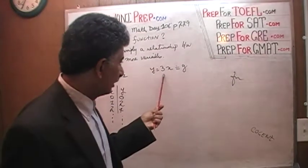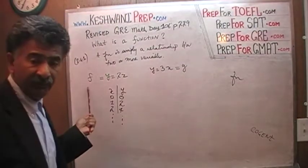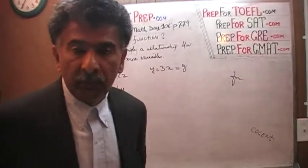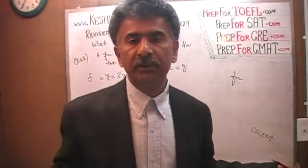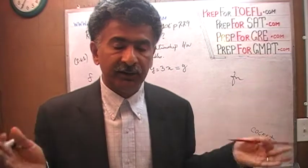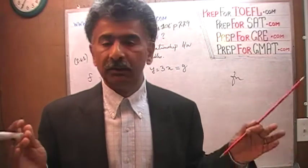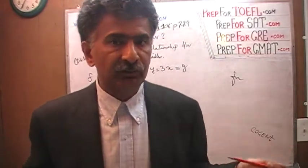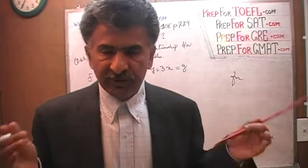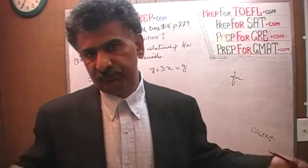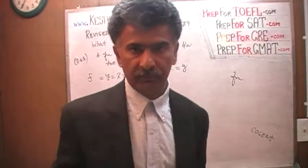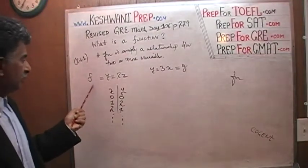Why do we start with f? Because traditionally, mathematicians use f for functions — just as they use x for unknowns. If you have more than one function, you go from f to g to h and so forth. Nobody will arrest you for using a different letter, but convention dictates we start with f.